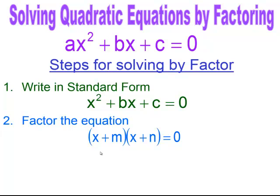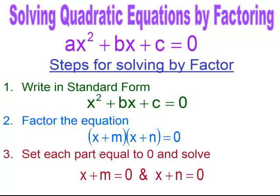Then you take each factor separately and set it equal to zero. That gives you two equations to solve. So let's see what this looks like.